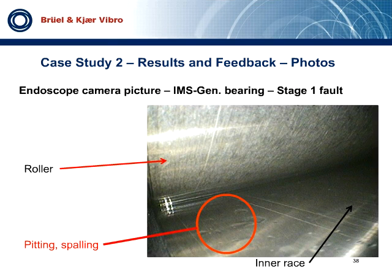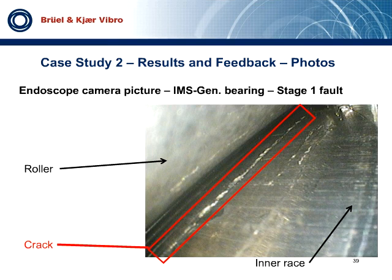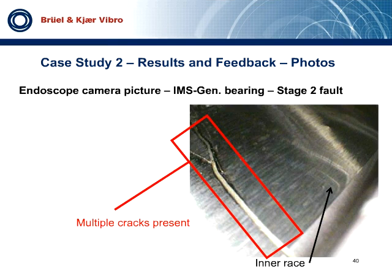Here are pictures received from the endoscope inspection of this bearing. Some pittings and dents can be seen on the bearing inner race — this is fault development stage one, showing actual hairline cracks on the bearing inner race. Another picture shows multiple cracks already present at fault development stage two, leading to bearing creep.